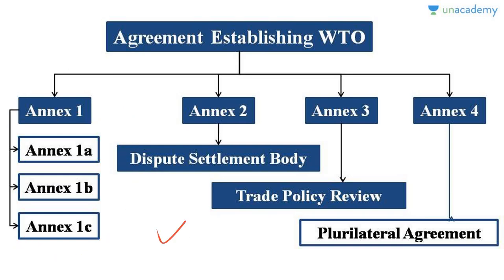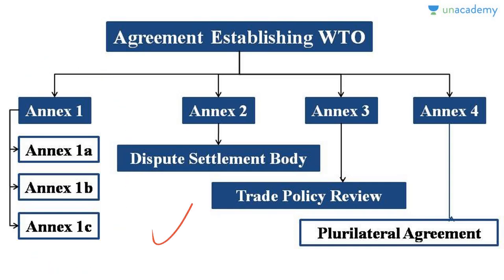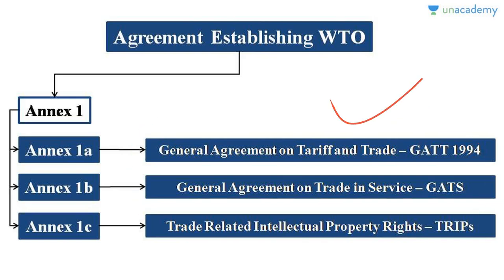This agreement is divided into four parts: Annex 1, Annex 2, Annex 3, and Annex 4. Annex 2 deals with dispute settlement, Annex 3 with trade policy review, and Annex 4 with plurilateral agreements. For us, the most important is Annex 1, which is subdivided into Annex 1A, 1B, and 1C.